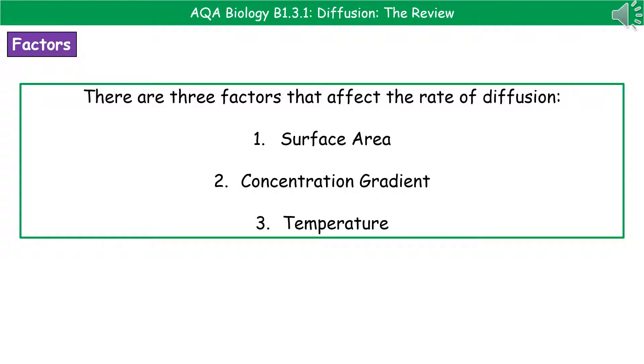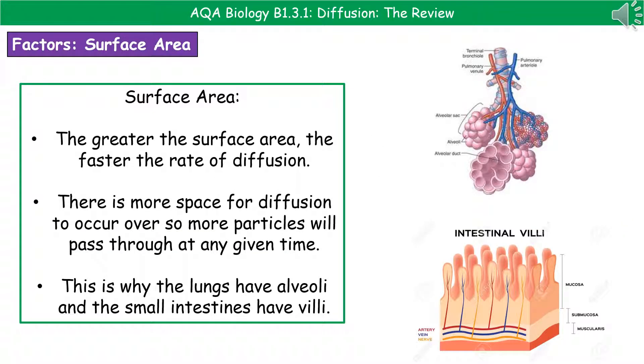There are actually three factors that can affect the rate of diffusion. And you need to know how they do this in each case. So our three factors are surface area, the concentration gradient, and the temperature. If we think about surface area first of all, then the pattern that we see here is that the greater the surface area, the faster the rate of diffusion.